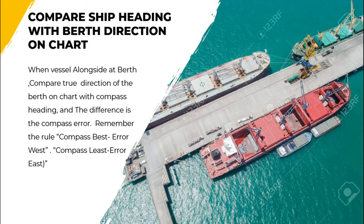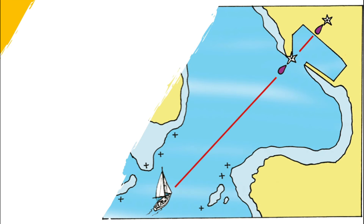To obtain compass error by comparison with berth direction on the chart: when the vessel is alongside at a berth, we can compare the true direction of the berth on the chart with the compass heading. The difference is the compass error. Remember the rule: compass best, error west; compass least, error east.